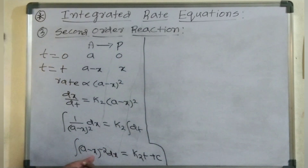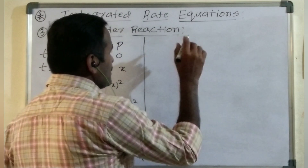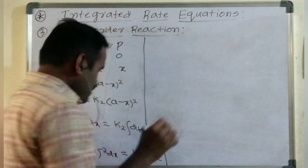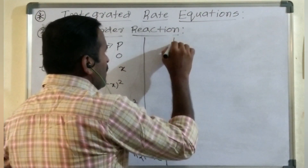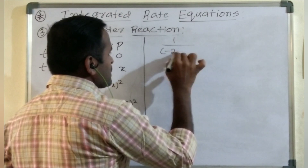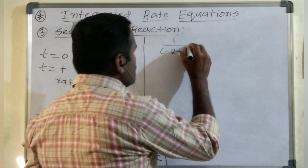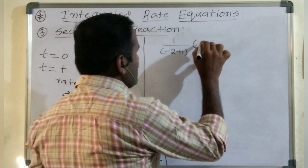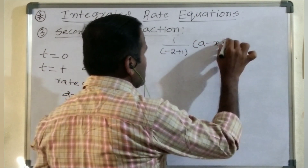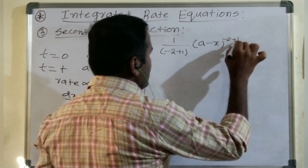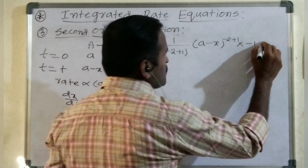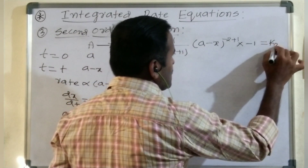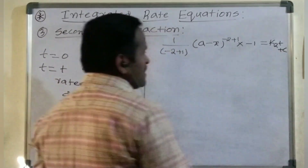For the integration of (A minus X)^(minus 2) into dX, we apply the power rule formula: 1 divided by (minus 2 plus 1) into (A minus X)^(minus 2 plus 1). The integration of dx with respect to (A minus X) gives a minus 1 factor. This equals K2·T plus constant C.